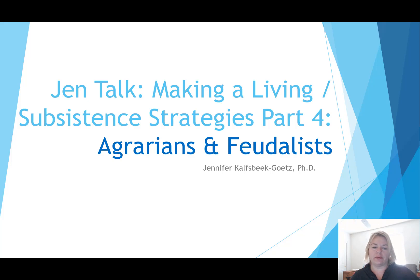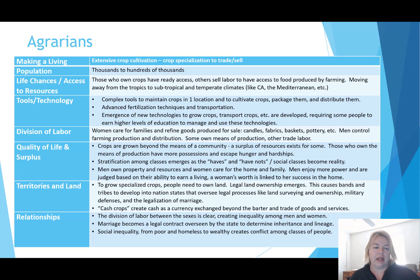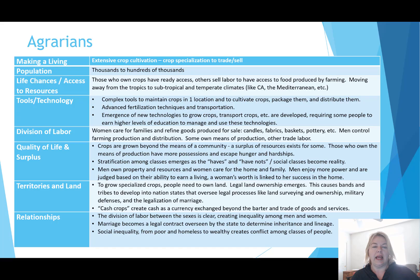Now it's time for part four: making a living, subsistence strategies — agrarians and feudalists. Agrarians are people who practice agriculture. They engage in extensive crop cultivation and crop specialization so that they can trade and sell what they grow. Unlike horticulturalists, agrarians grow far more than what they need and typically specialize in one, two, or maybe three different kinds of crops, growing in excess so they can sell for money.